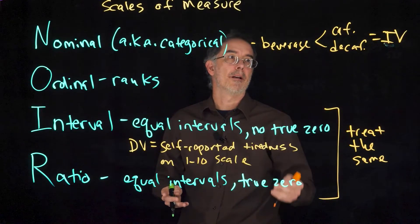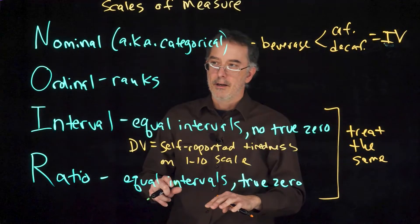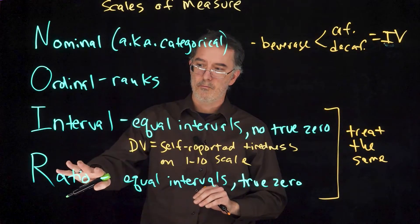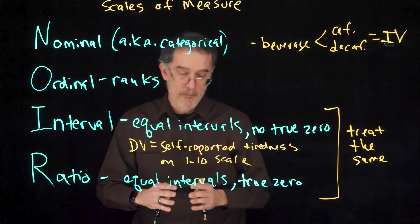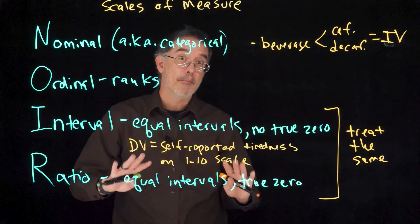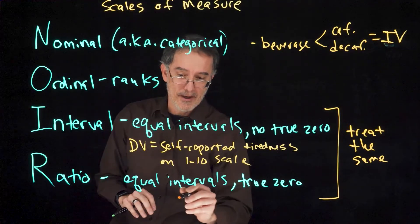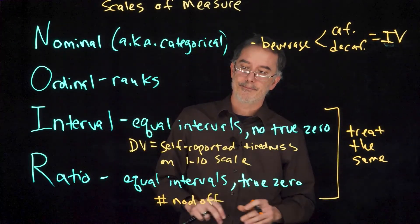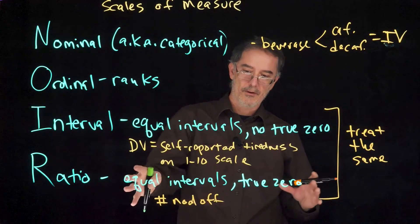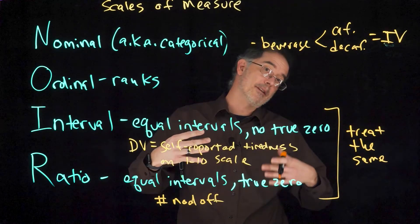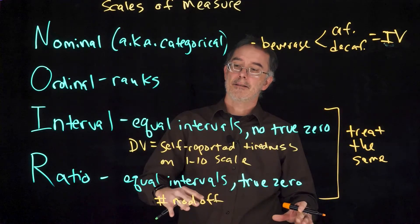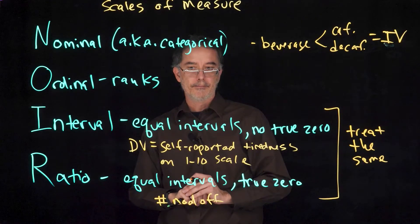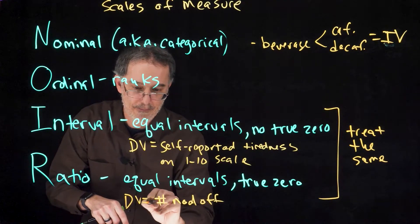Notice we could have done the exact same experiment, giving them caffeinated coffee or decaffeinated coffee, and then done a different kind of measure that could have been a ratio scale. For example, we could have put them in a really boring situation, maybe had them watch a stats video or something like that, and watched how many times, counted how many times they nod off, that they start to fall asleep. This would have been something where zero is the minimum value, and if you nod off two times, that is half as many as nodding off four times. In that case, the outcome variable would have been a ratio scale of measure variable. This would have been the DV with that scenario.